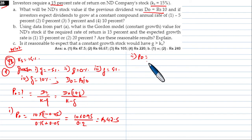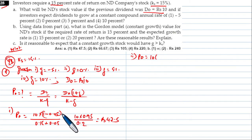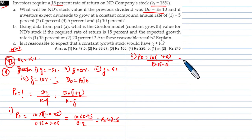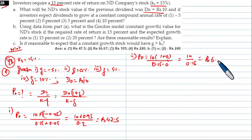For g = 0%: D1 = D0(1 + 0) = 10. P0 = 10 / (0.15 - 0) = 10 / 0.15 = Rs. 66.67.